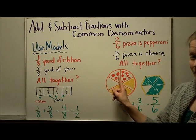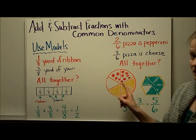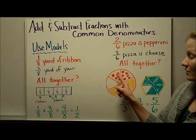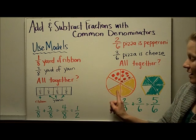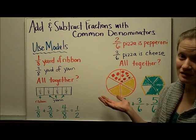you could show it with a circle model. I've divided my pizza into 6 pieces. I have 2 parts are pepperoni, 3 parts are cheese, and you can count the parts that are shaded or colored. 1, 2, 3, 4, 5/6 of the pizza is there.